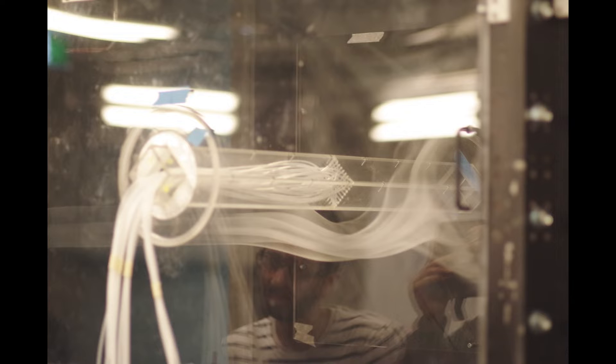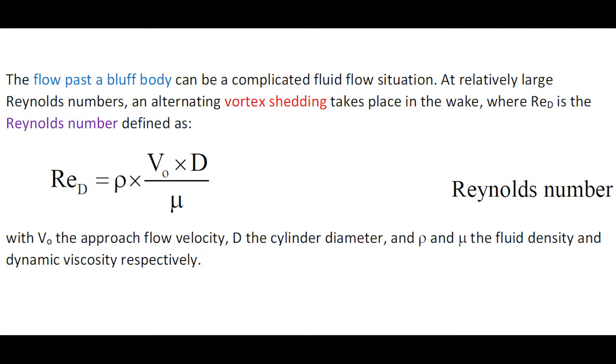Let us talk about flow visualization behind a square cylinder and its vortex shedding. The flow past a bluff body can be a complicated flow motion. At a relatively large Reynolds number, an alternative vortex shedding takes place in the wake.